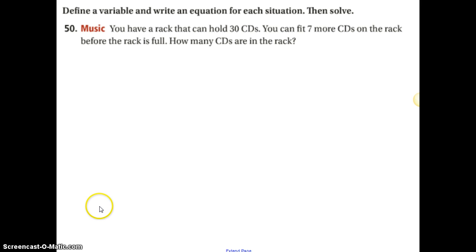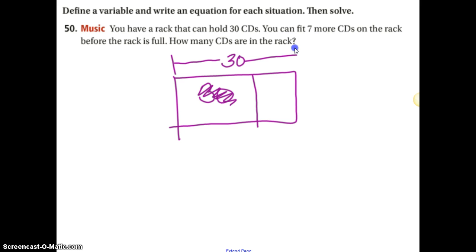Fifty. Define a variable and write an equation for each situation and then solve. So you have a rack that can hold 30 CDs. You can fit seven more CDs on the rack before the rack is full. So here's my rack. I've got 30 CDs. So this is 30. So I can fit seven more. Hmm. So, oh, this isn't right, is it? Nope. The whole thing can hold 30. There you go. 30. So, always be careful and watch. And if you think, what? I might be doing it wrong. The whole thing can do 30. You know that you can do seven. So how much is this? So, the way I write that is x plus 7 equals 30. Nice. Alright. So, x is 23. Because 23 plus 7 gives you 30.